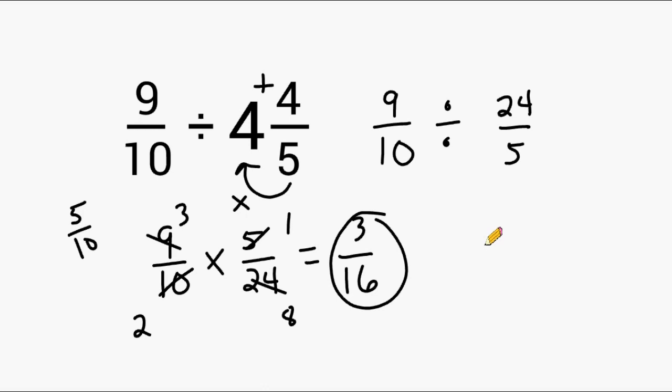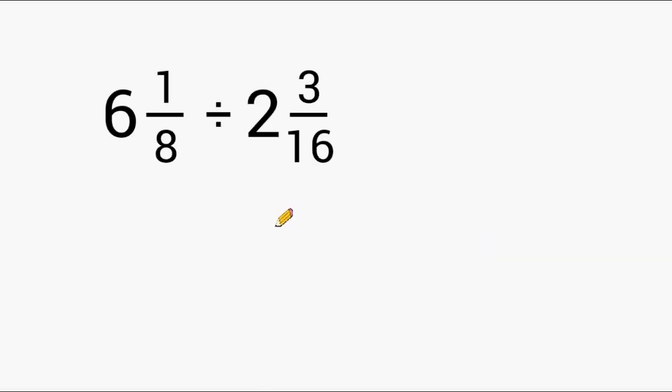Now let's try one more example. Each one of these values is a mixed number, so let's rewrite each one as an improper fraction. With 6 and 1 eighth, we write its denominator which is an 8. And for the second value, 2 and 3 sixteenths, we write its denominator which is 16.